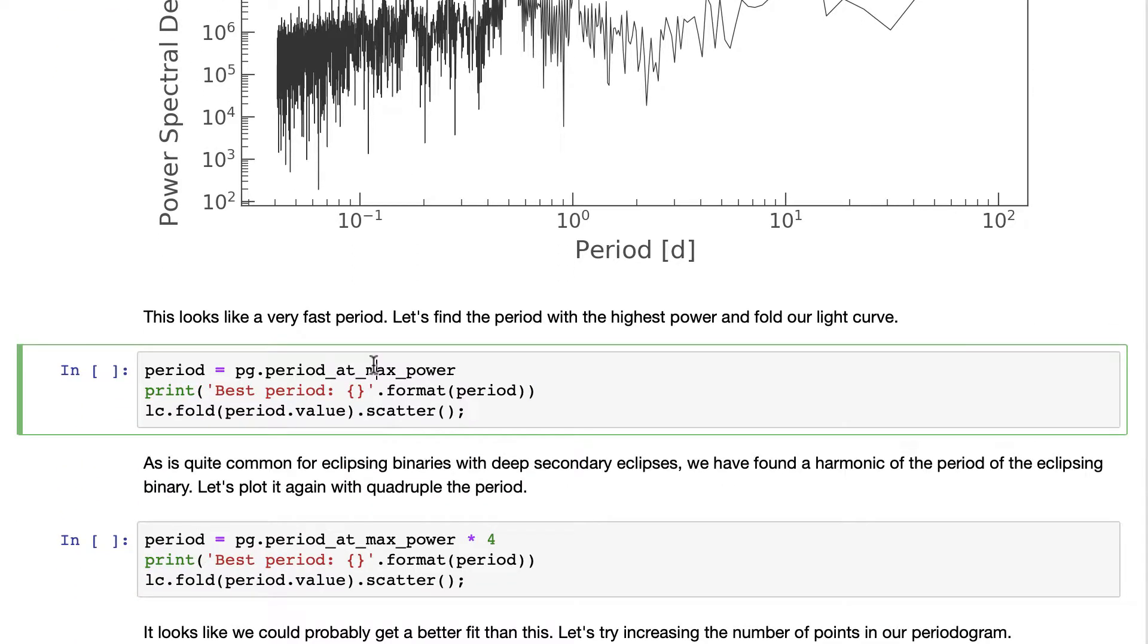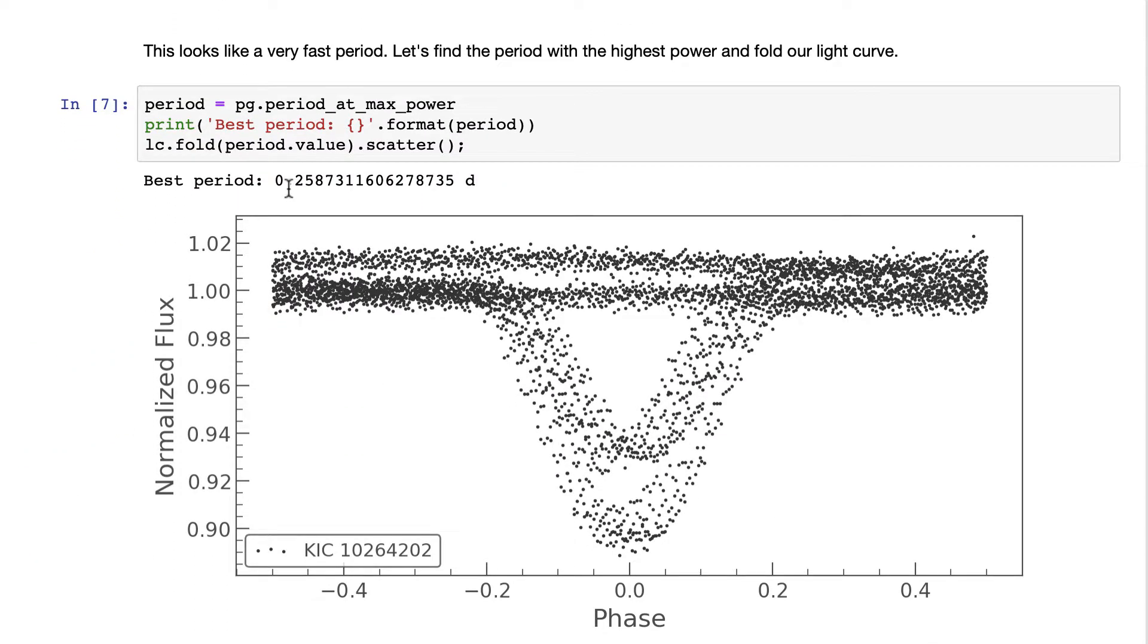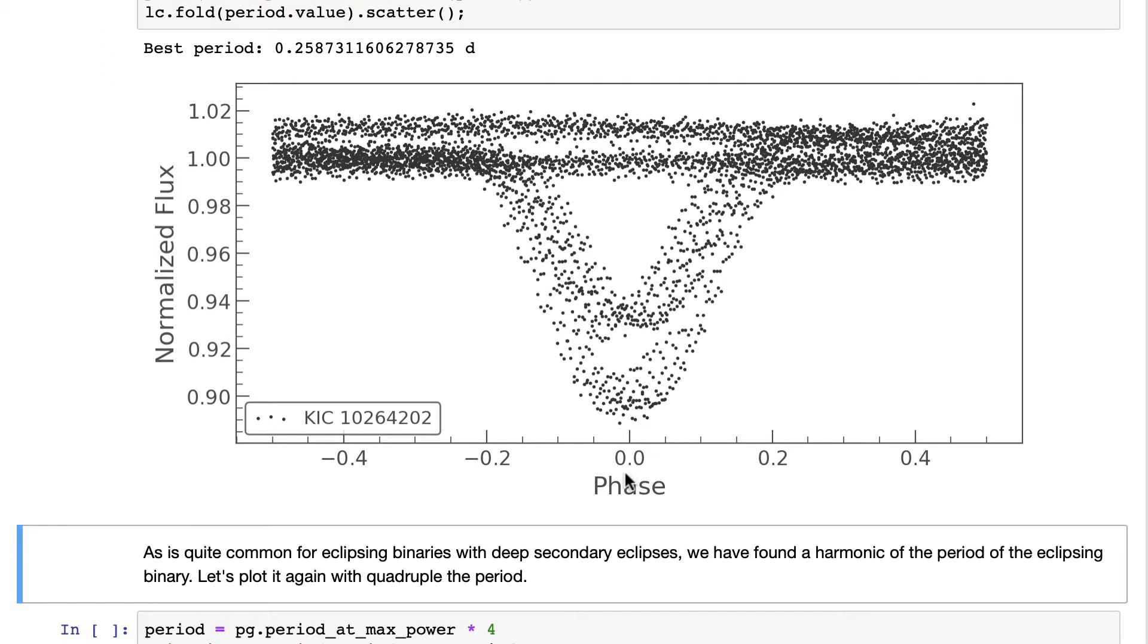So we can say, what is the period at the max power? And we find that the period is something like 0.258 days.